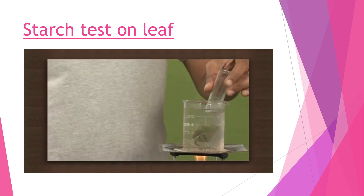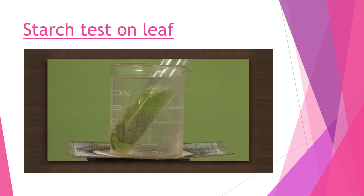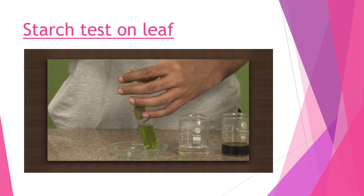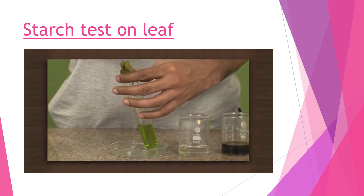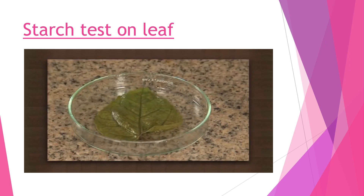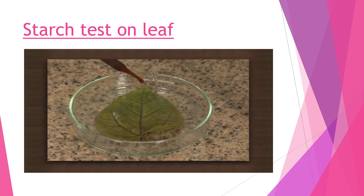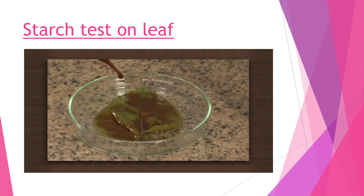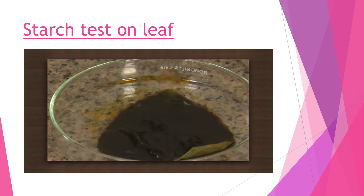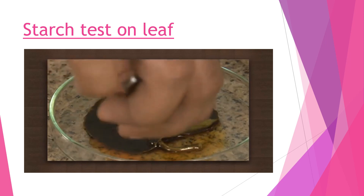Keep the test tube in the boiling water. The chlorophyll slowly dissolves into the alcohol, and you will note that the alcohol turns green. Removal of chlorophyll will help us observe the color change of iodine clearly. Then place the bleached leaf in a petri dish and pour iodine solution over it. Note the color of the leaf - it changes to dark blue-black. This is because iodine combines with starch present in the leaf and forms a colored complex. This shows that starch is present in leaves.